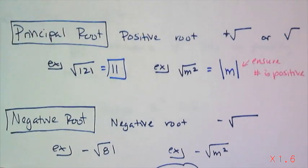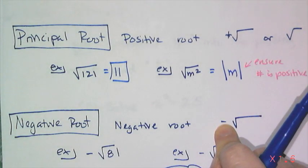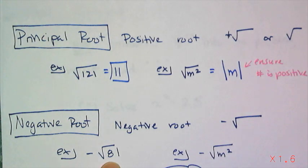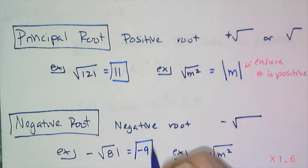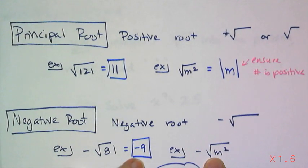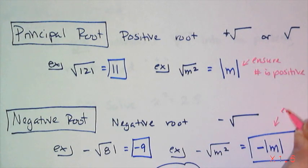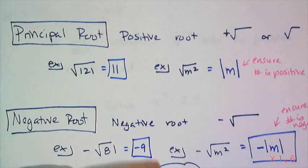Now the other version of the root is the negative root. And when I want the negative root, you're actually going to see the negative sign out in front of it. And so if I see negative square root of 81, that means I want negative 9. And in the case of the variable, I have to ensure that it's negative. And so I'm going to do something similar with this one. So to make sure that it is negative, I do the absolute value of m like I did before, but I put the negative sign out front to make sure that that number is negative. So this is to ensure number is negative. And once again, that's the thing you have to be careful with, with the variables inside the radical.